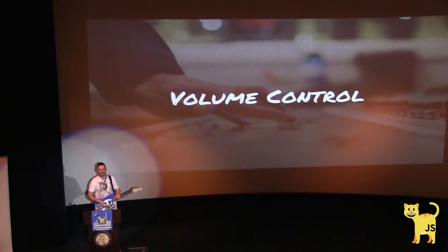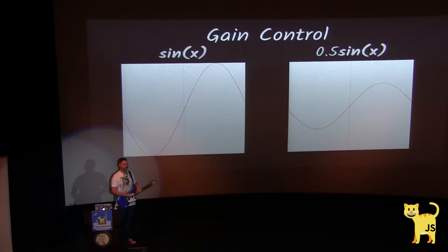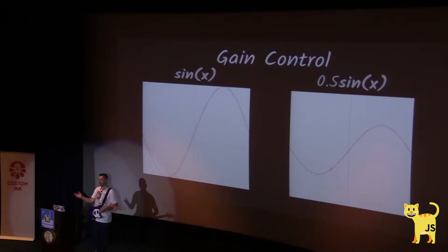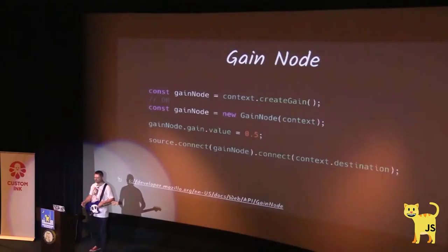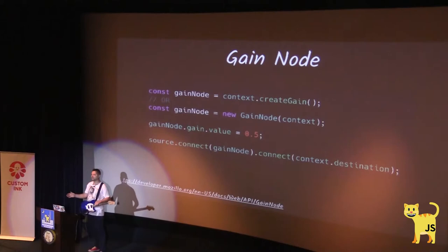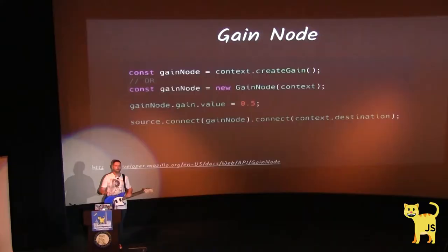We could control the volume of our instrument programmatically. For that, we have a gain control node. Our sound can be visually represented as a sinusoid function. If we want less volume, less gain, we just multiply it by values less than one. If we want it louder, we multiply it by two, by three, and we get more volume. We create a gain node from our context and assign the gain value, which should be from zero to one to control the volume.